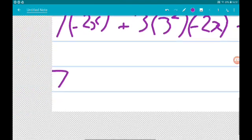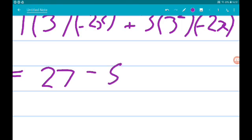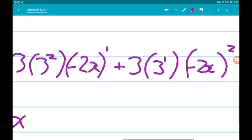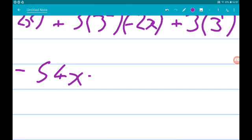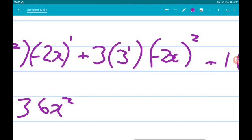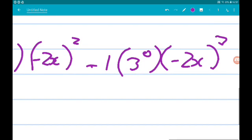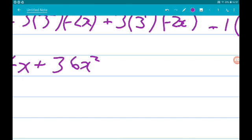And then we got 3 times 3, so 9 times minus 2x all squared. So that's 9 times 4x squared. So let's add 36x squared. And then the final term is minus 2x cubed, so that's going to give us minus 8x cubed.